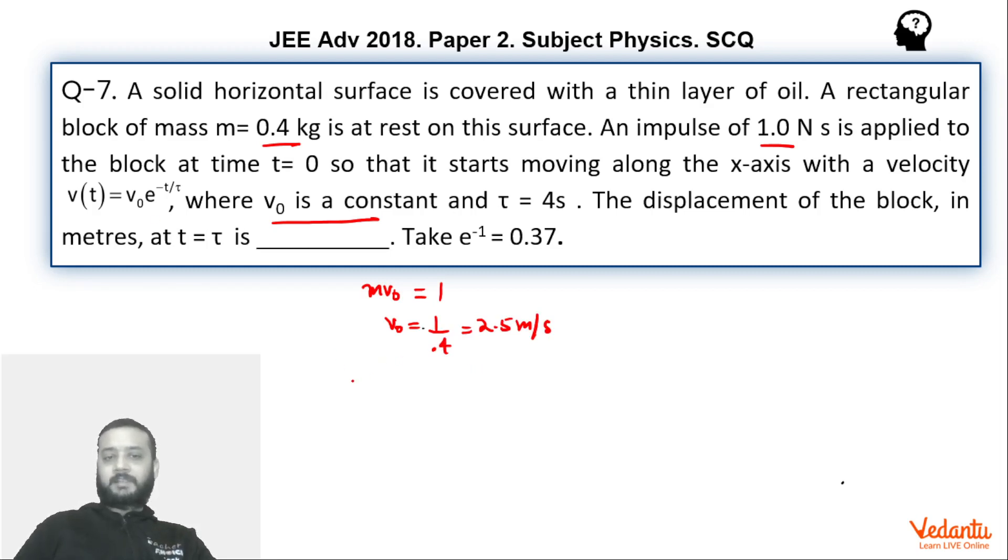Now we can simply say that velocity whose function has been given as ds by dt. So ds by dt is nothing but v0 times e to the power minus t by tau. So you can take this dt on the right side and integrate fairly easy. At time zero the displacement would have been zero and at time t displacement would have become s.